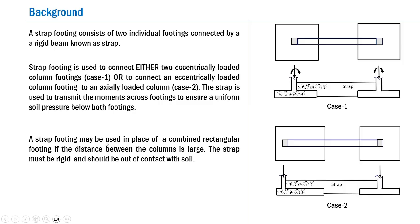A strap footing may be used in place of a combined rectangular footing if the distance between the columns is large. If the distance between the two column footings is too large, the combined footing action will not come into effect, and a strap footing would be a better choice. The important requirement is that the strap — the connecting beam — must be rigid and must not be in contact with the soil.